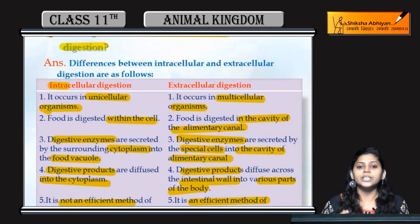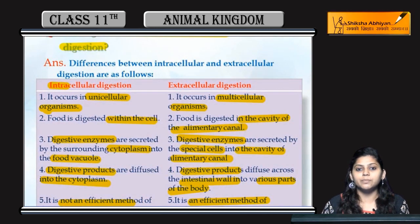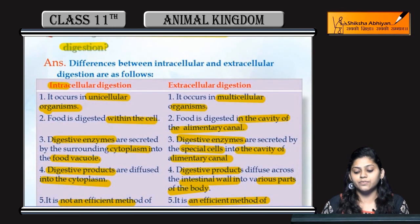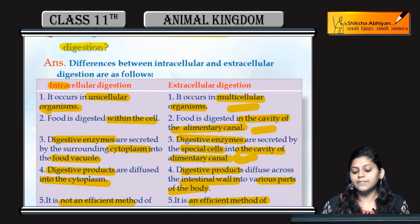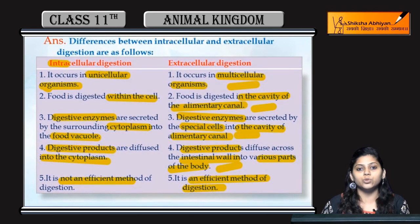To summarize: intracellular digestion occurs within the cell, in unicellular organisms; digestive enzymes are secreted from the cytoplasm and products diffuse back into the cytoplasm — it is not an efficient method. Extracellular digestion occurs outside the cell, within the alimentary canal, in multicellular organisms; digestive enzymes are secreted by special cells into the alimentary canal, and digestive products diffuse through the intestinal wall to reach all body parts — it is an efficient method of digestion.